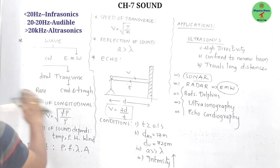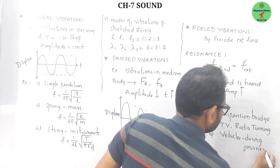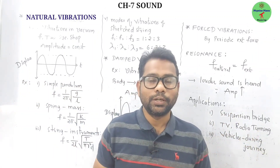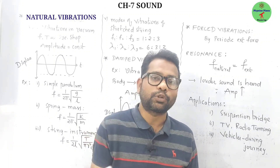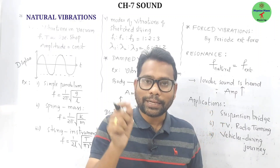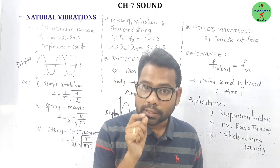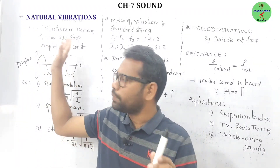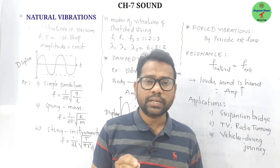Now we discuss the types of vibrations. Natural vibrations are periodic vibrations that occur in the absence of any external force. Examples include oscillations of a pendulum in vacuum and vibrations of a tuning fork in vacuum — any vibrations of an object happening in vacuum are natural vibrations.